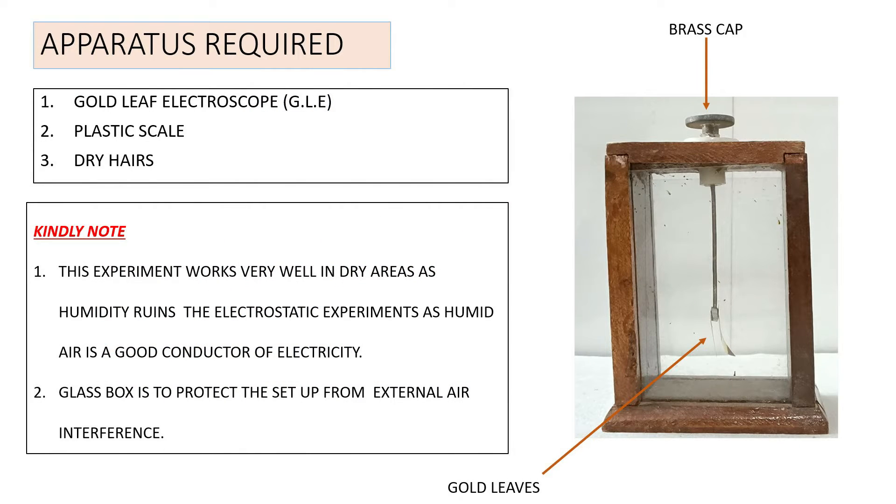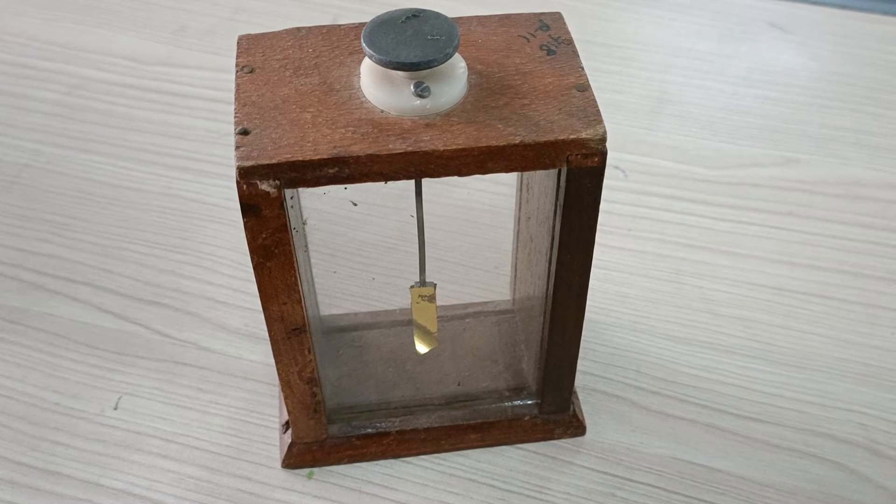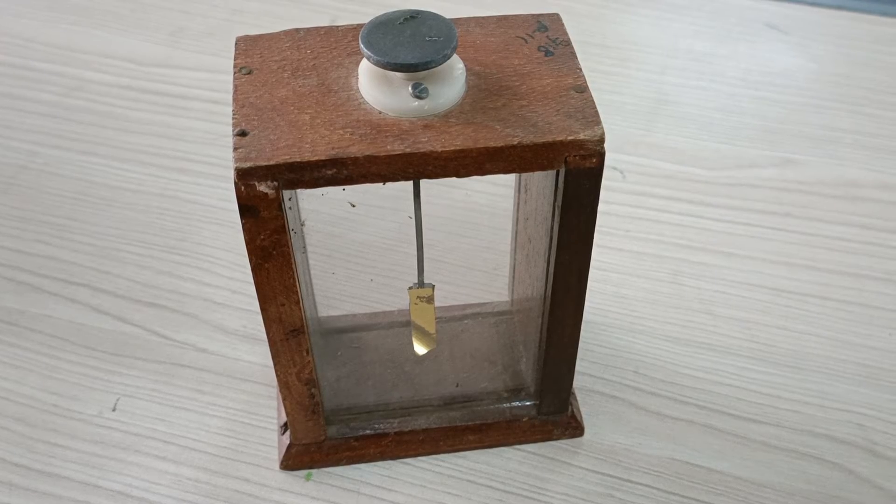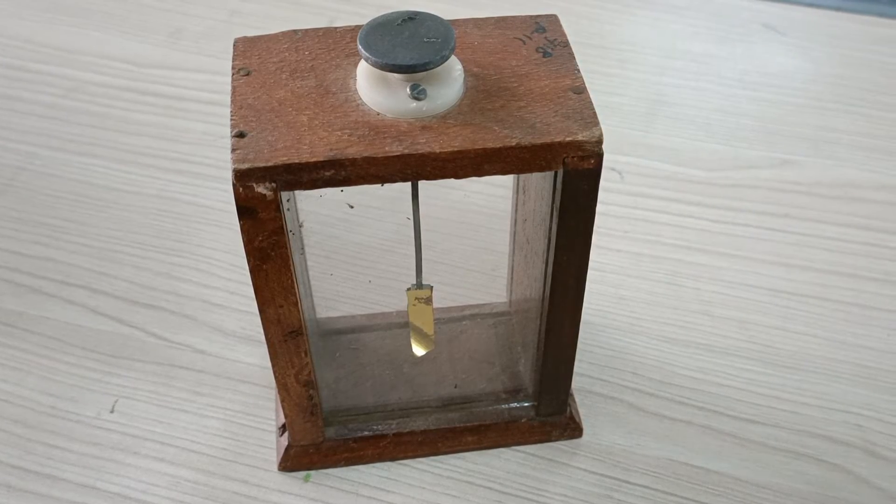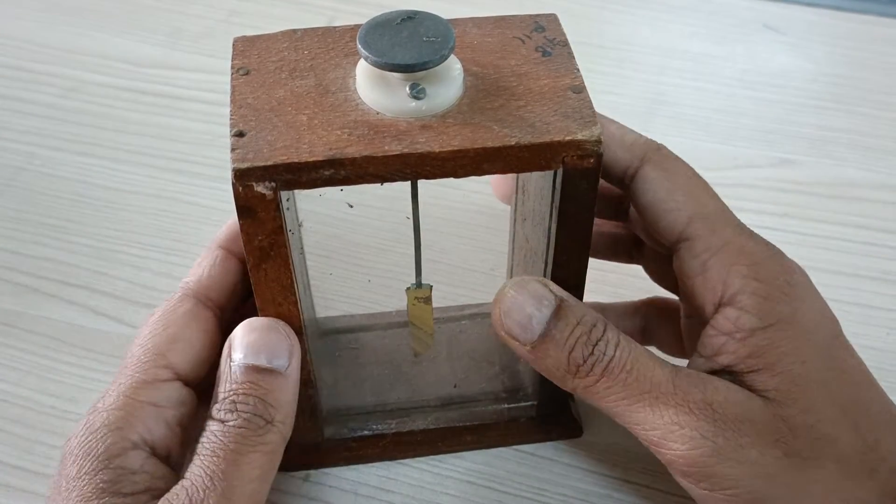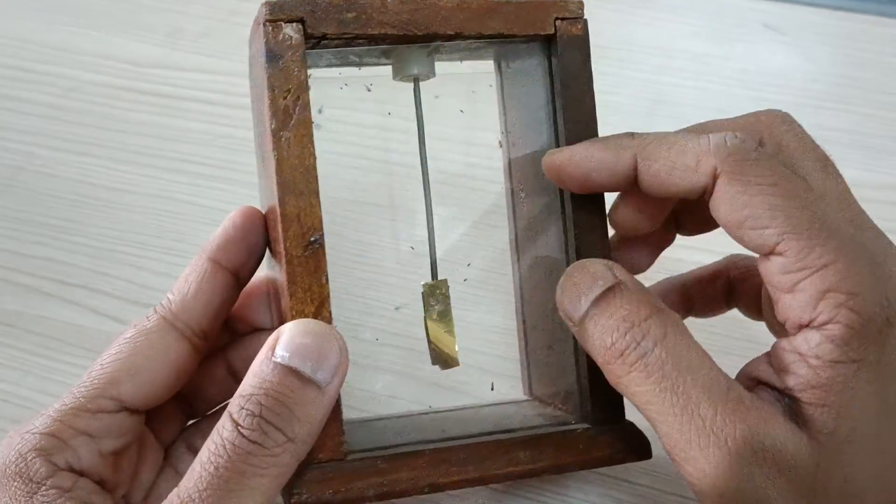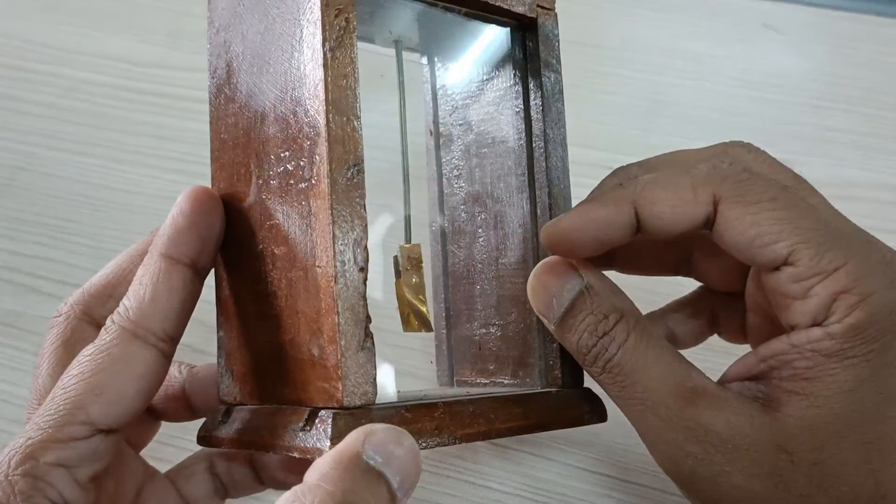Hello everybody, how are you all? In this video I'm going to do some classic experiments related to static electricity. Here I have a gold leaf electroscope that is used to check whether a body is charged or not, and if a body is charged, then whether the body is positively charged or negatively charged.